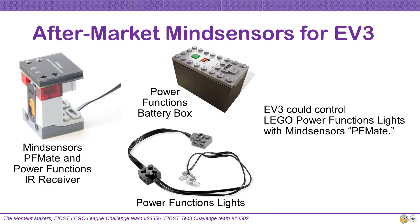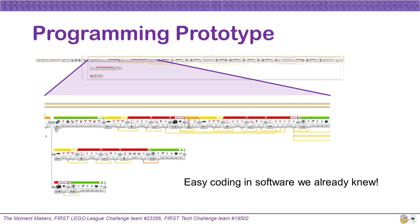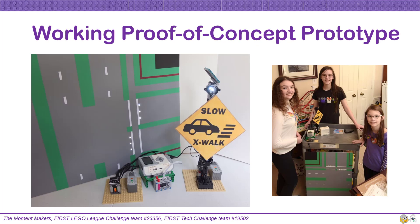We wanted our prototype to have a sign and in-roadway lights that would light up when specific speeds were detected, so that we could better demonstrate our solution. We ordered another aftermarket part from MindSensors that allowed our EV3 to control the old LEGO power functions. This allowed our EV3 to control power function lights that we then installed in both our sign and the model of a roadway. We constructed a miniature model of the pedestrian-sized sign using various LEGO parts and cardboard. We decorated a foam board to look like the model roadway and installed the power function lights in both the sign and the roadway board. Using MindSensors' EV3 lab programming blocks, it was relatively easy to program our prototype using the EV3 lab software that we already knew. It took some hard work, but we created a working proof-of-concept prototype.